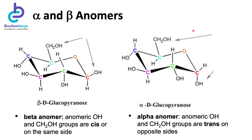Looking at the two anomeric forms of carbohydrates: if the anomeric hydroxyl group is cis, or on the same side as the CH2OH group at carbon 6, then it is considered to be the beta anomer of glucose. On the other hand, it will be the alpha anomer if the anomeric hydroxyl group is located on the opposite side of the plane from the CH2OH group or the C6 group.